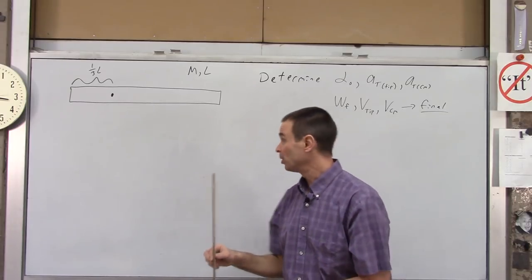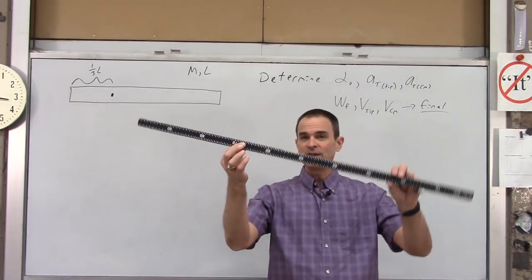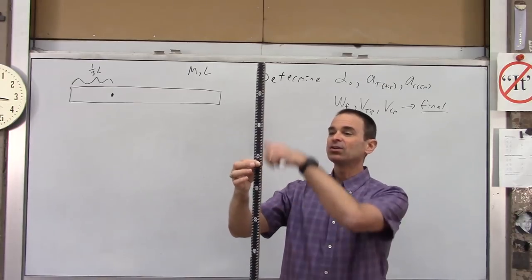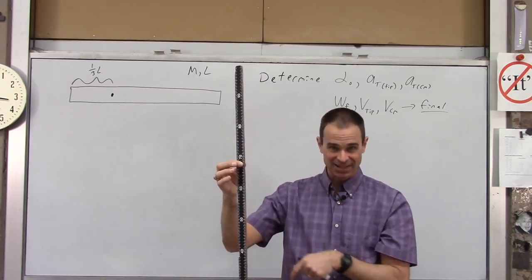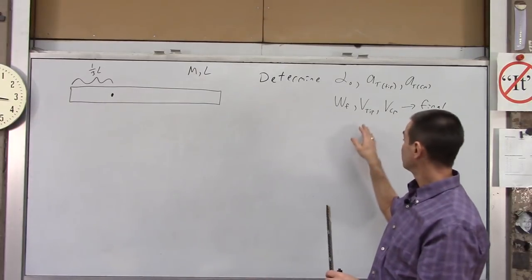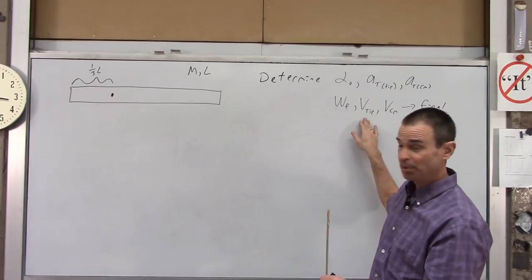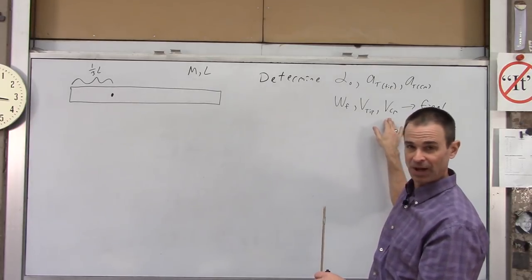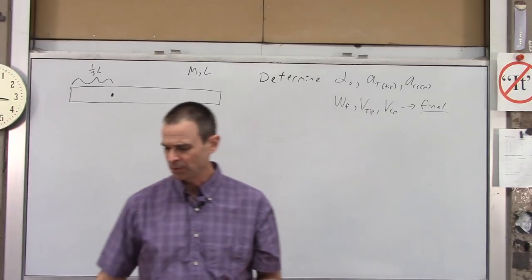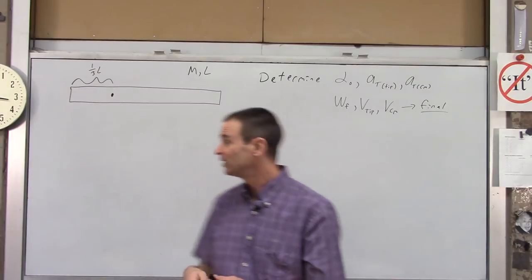Part two of the problem is to determine, as the rod swings through its lowest point, what is the angular velocity, and also what are the tangential velocities of both the tip and the center of mass. They're quite different problems, and I'll explain when we transition from one to the other what makes them so different.